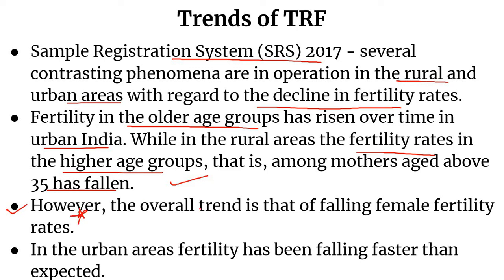In urban areas, fertility has been falling faster than expected. As of 2017, the TFR of urban India has fallen to 1.7, which is lower than the replacement level.